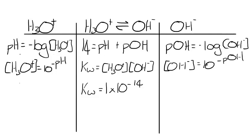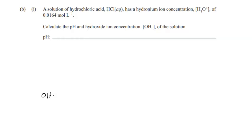Let's go over a couple of examples. So this is from the 2019 exam. A solution of hydrochloric acid has a hydronium ion concentration of 0.0164. Calculate the pH and hydroxide ion concentration of the solution. So for the pH, the formula that we use is negative log H3O+ is equal to the pH. So we just put that into our calculator, negative log 0.0164.